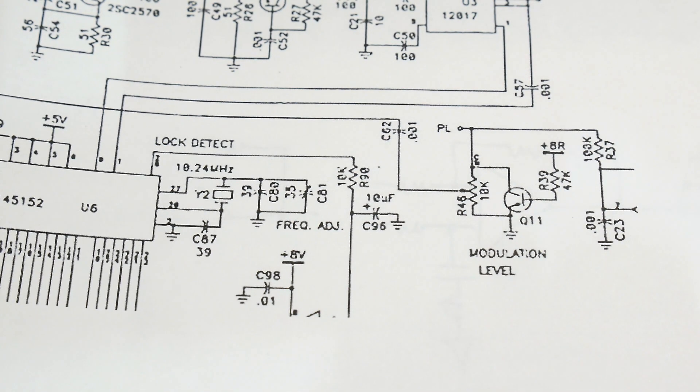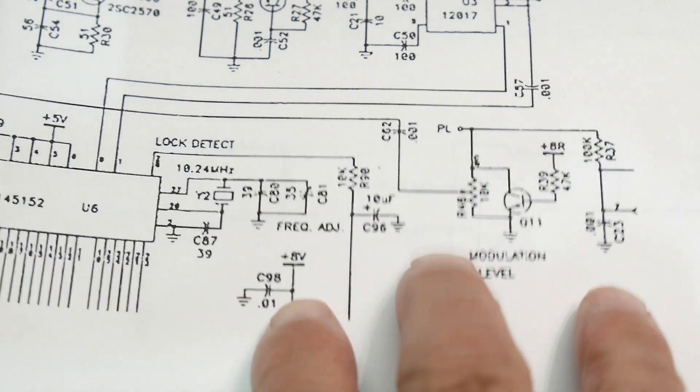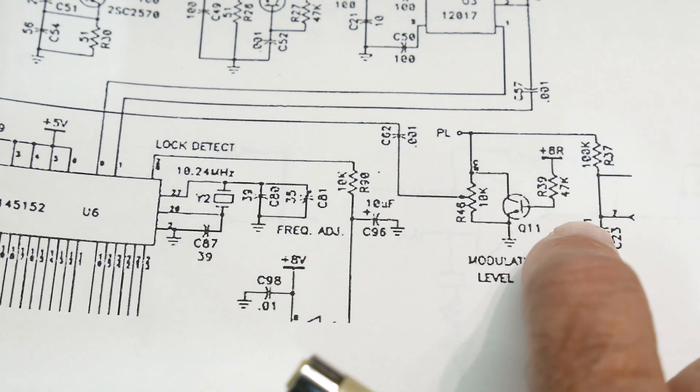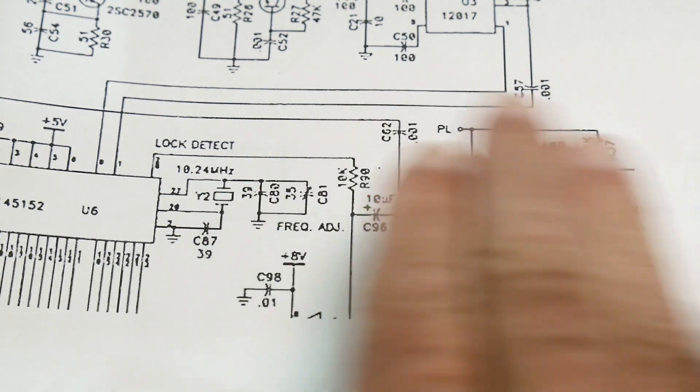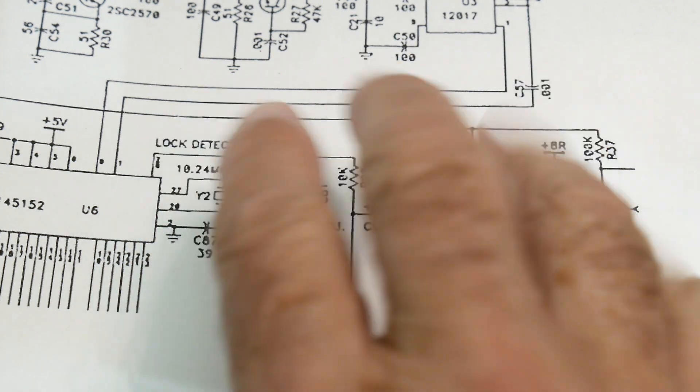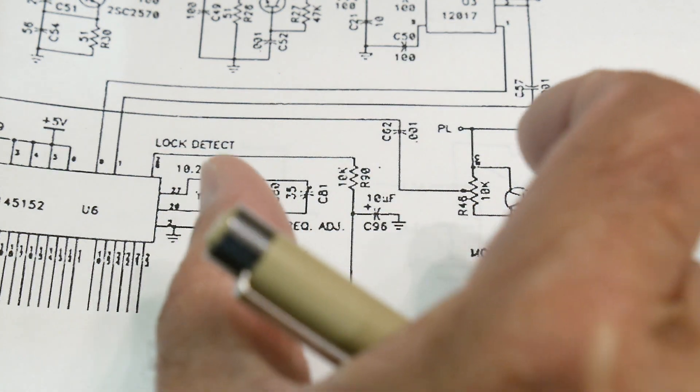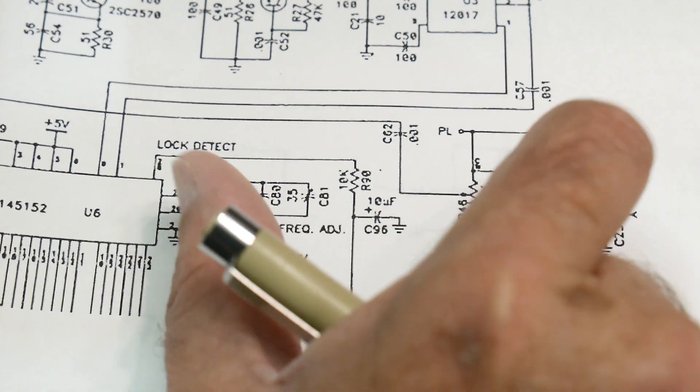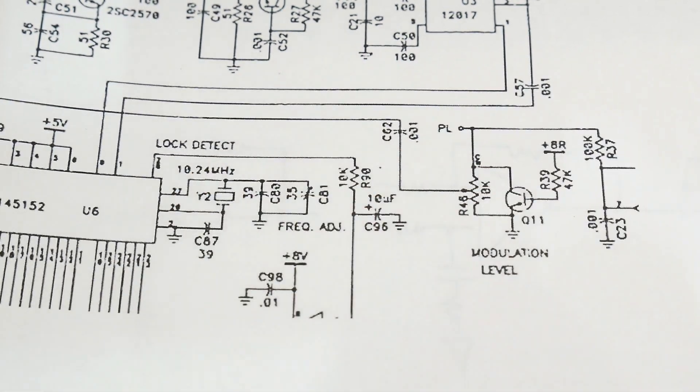Now you can measure that on your spectrum analyzer. You can put the spectrum analyzer to look at the output and then talk into the microphone and watch the frequency spread. You can put it on max hold and kind of build up the picture, and you can see how much of the maximum frequency to the minimum frequency - that is your modulation depth.